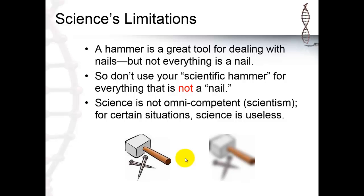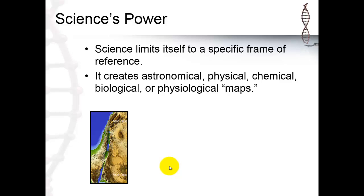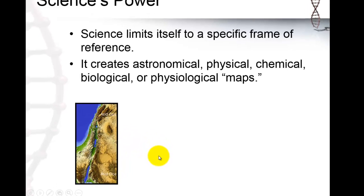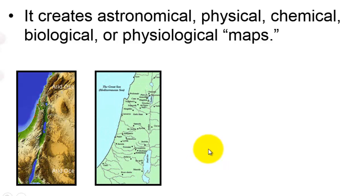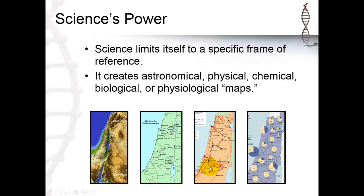Scientism claims that science can do anything it wants, but for certain situations, science is useless. Its power is that it can look from a specific frame of reference. It creates astronomical, physical, chemical, biological, or physiological maps. It's like this map. It shows us Israel for elevation purposes. Where are the high points? Where are the low points? You can look at the same thing through another frame of reference, through another window. You can look at it from another angle. It's that we can look at it from different angles, and that's what science is good at.